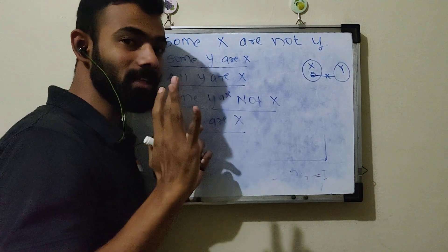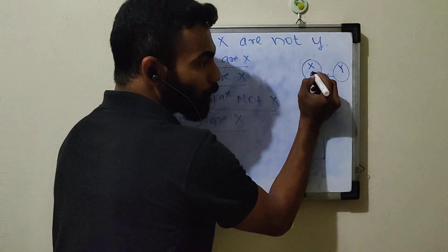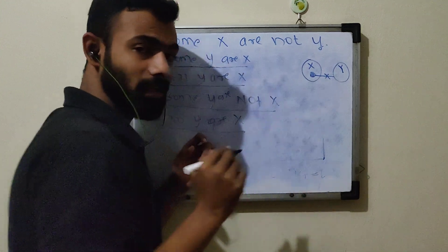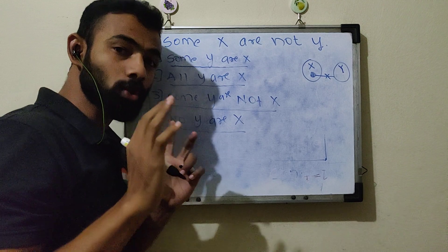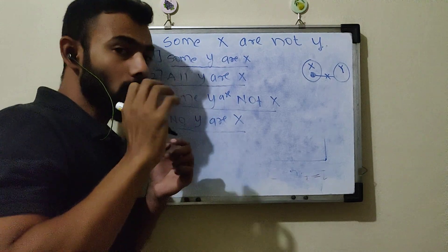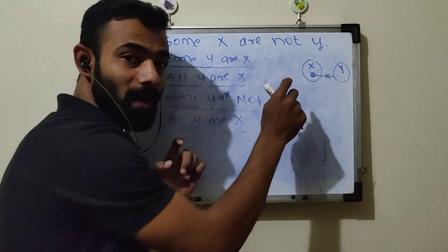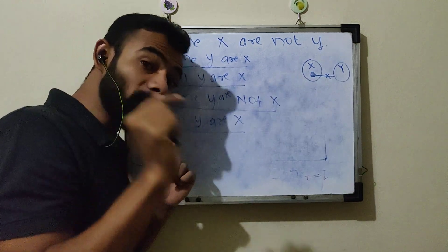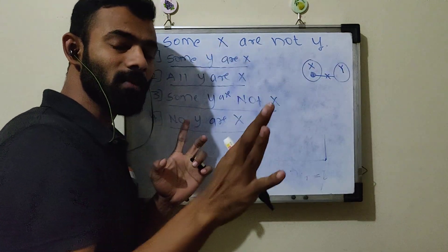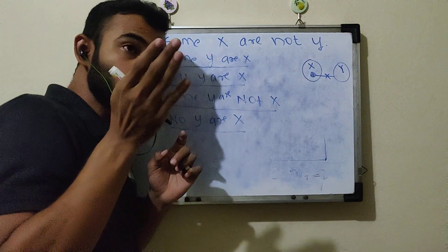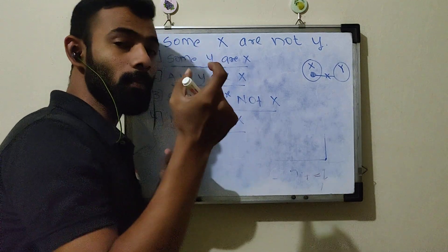What is the statement talking about? It is talking about only this shaded part. All those conclusions which you draw on the shaded part — those conclusions which remain definite — will be correct. The rest, when we talk about the unshaded area, those conclusions will be true only in the possibility.